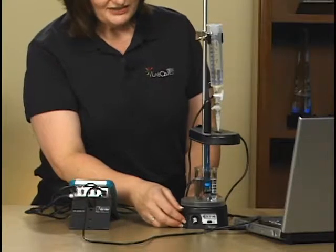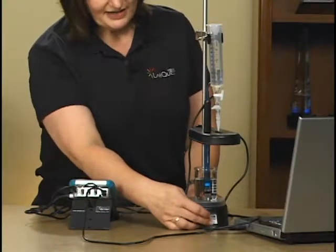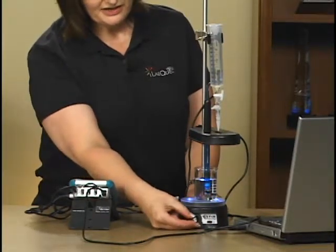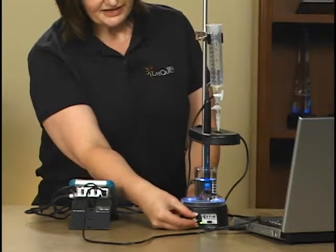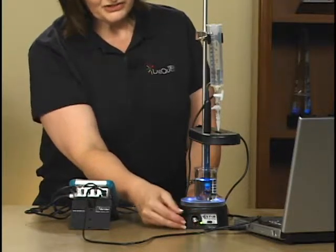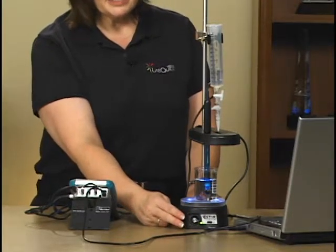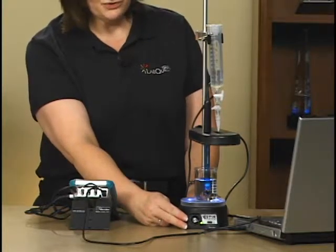We'll start with a stir station. This is our magnetic stirrer, and it has some LEDs I'll turn on here and then turn on the stirrer itself. This stir station has a built-in ring stand. It can also be run on batteries or through AC power.